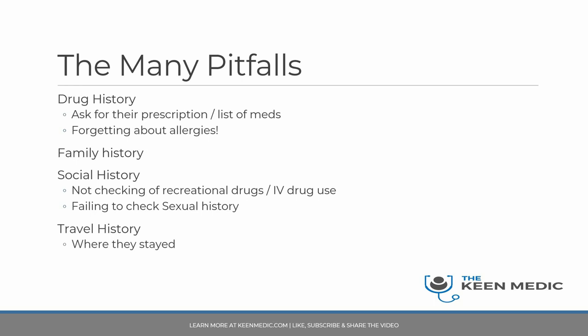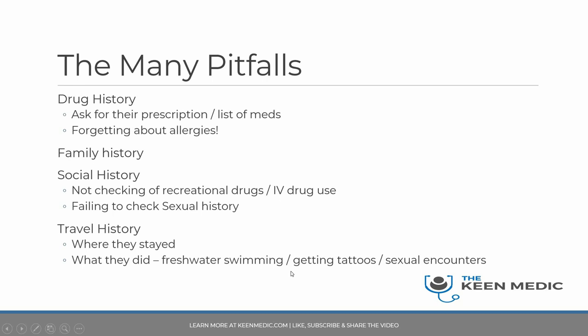But that's not all. You need to ask where they stayed — for example, if they've come in with pneumonia-type symptoms, it might be Legionnaires. You need to know what they did, because it could be a tropical infectious disease picked up from freshwater swimming, or hepatitis or HIV picked up from tattoos or sexual encounters. And lastly, whether or not they had any vaccinations done before their travel. To summarize travel history: be specific about duration, where they went, where they stayed, their activities, and vaccinations.